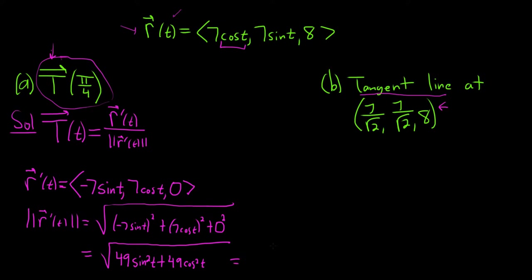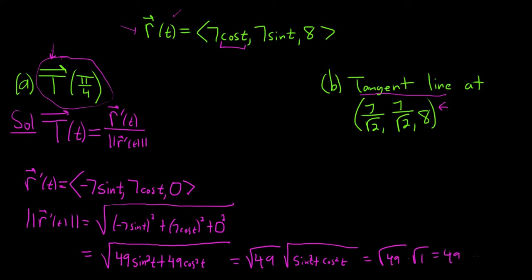You can pull out a 49 and break it up: √49 · √(sin²(t) + cos²(t)). Since sin²(t) + cos²(t) = 1, the whole expression simplifies. That's the Pythagorean identity that most people know.